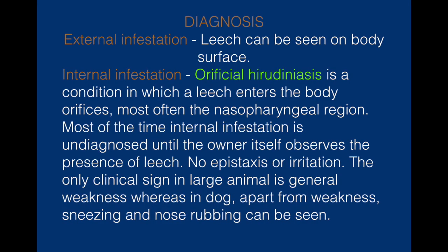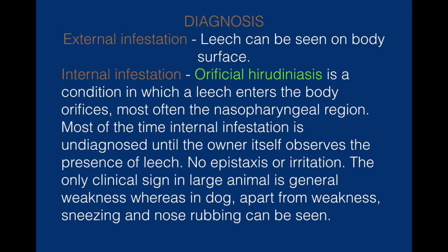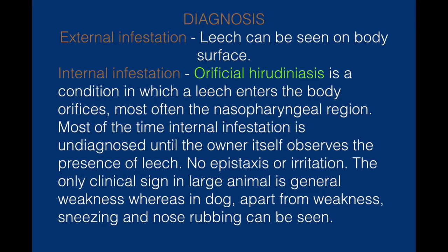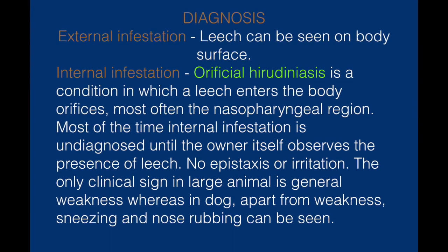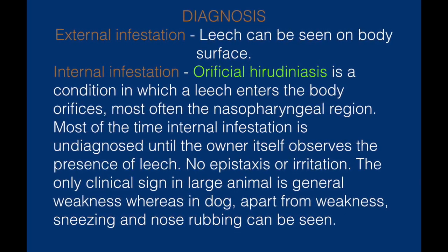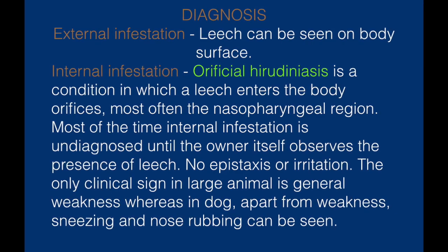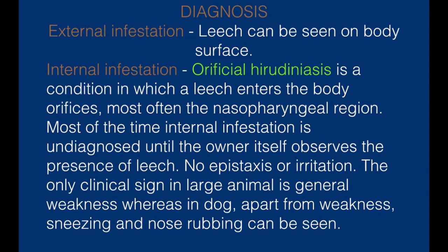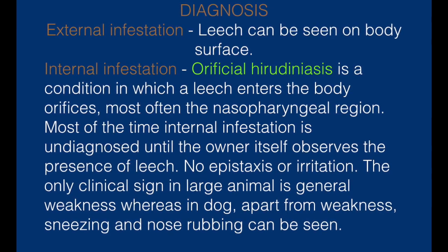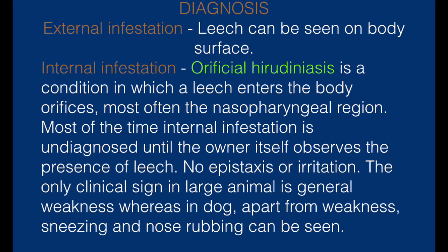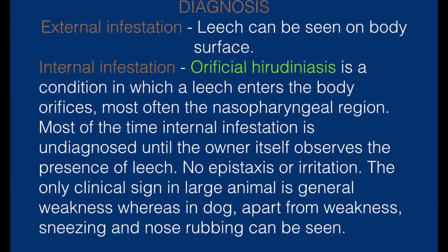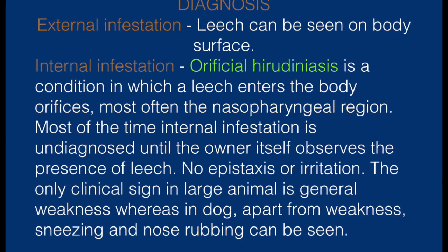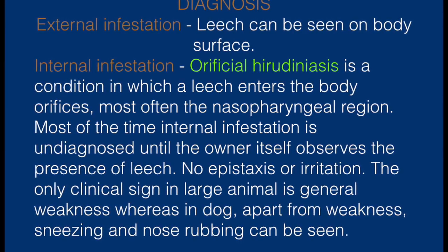Diagnosis: In external infestation, leeches can be seen on the body surface. Internal infestation or orificial hirudinosis is a condition in which the leach enters the body orifices, mostly the nasopharyngeal region. Most of the time internal infestation is undiagnosed until the owner themselves observes the presence of leach. No epistaxis or irritation occurs. The only clinical sign in large animals is general weakness, whereas in dogs, apart from weakness, sneezing and nose rubbing can be seen.